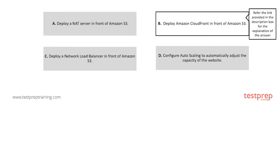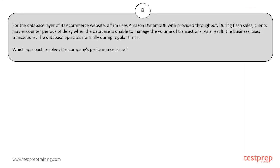Question number eight: For the database layer of its e-commerce website, a firm uses Amazon DynamoDB with provisioned throughput. During flash sales, clients may encounter periods of delay when the database is unable to manage the volume of transactions. As a result, the business loses transactions.